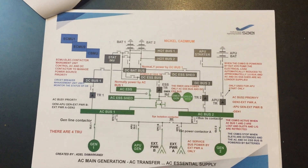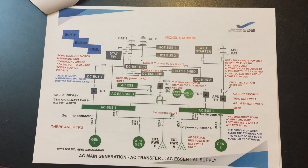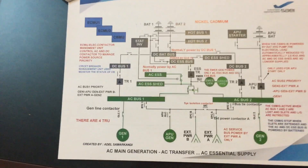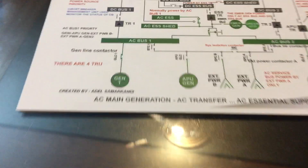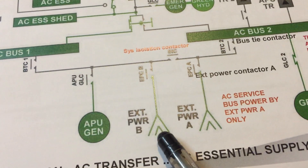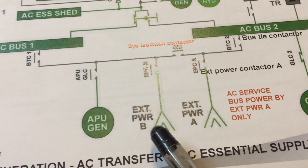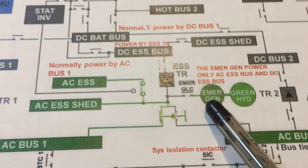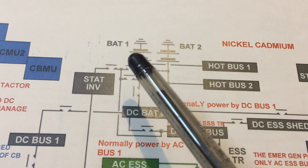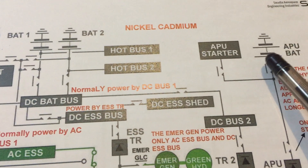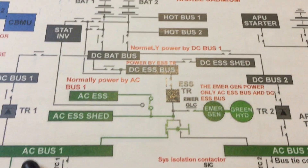Hello everybody, today I'm going to talk about the A330 electrical system. The electric sources for the A330 are: engine generator number one, engine generator number two, external power A and B, APU generator, emergency generator, battery number one, battery number two, battery number three, and APU battery.